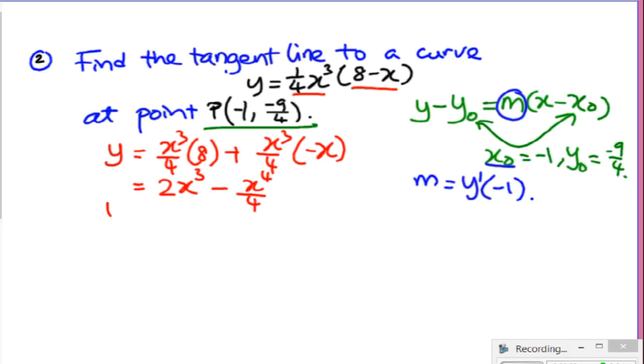Now I take the derivative with respect to x. It's 2 times 3, power comes down, power is reduced by 1, minus, power comes down again, power is reduced by 1. Therefore, simplifying this gives me 6x squared minus x to the power of 3.